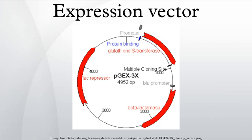This tag could be a histidine tag, other marker peptides, or a fusion partner such as glutathione-S-transferase or maltose binding protein. Some of these fusion partners may also help to increase the solubility of some expressed proteins. Other fusion proteins such as green fluorescent protein may act as a reporter gene for the identification of successful cloned genes.